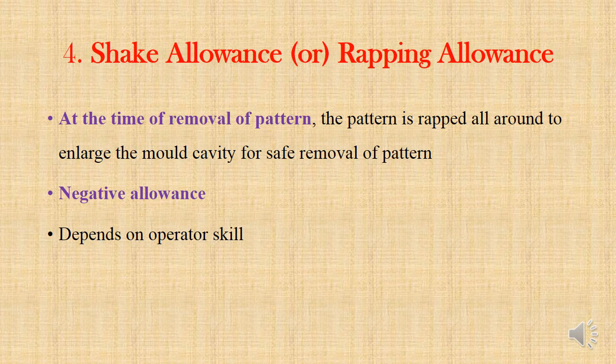The next type is shake allowance or rapping allowance. At the time of removal, the pattern is shaken or rapped all around. This enlarges the mold cavity and supports safe removal of the pattern. But because of the enlargement, the casting size gets bigger. To avoid this, a negative allowance is applied during pattern making, and skilled labor can also be used.